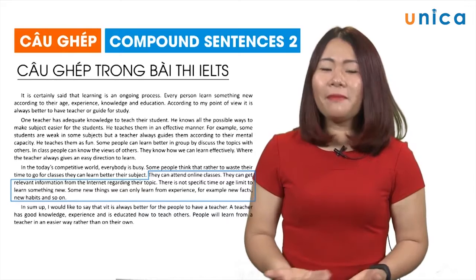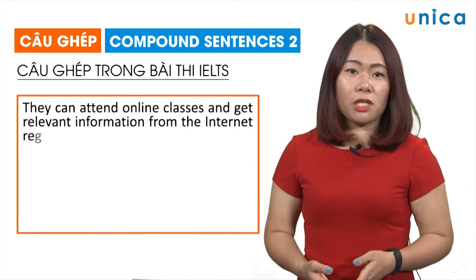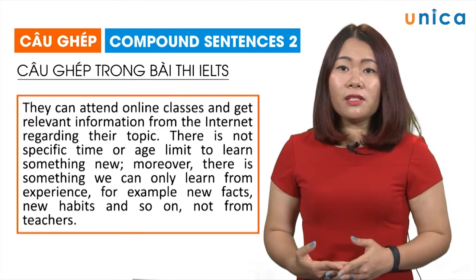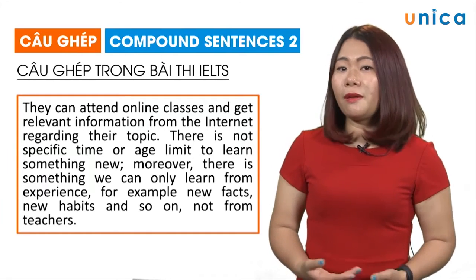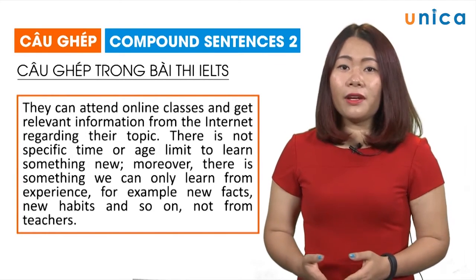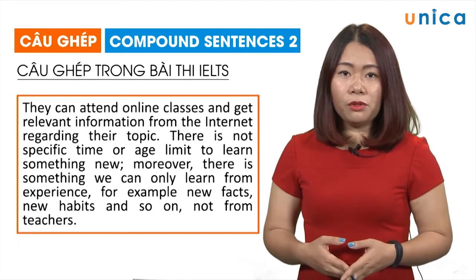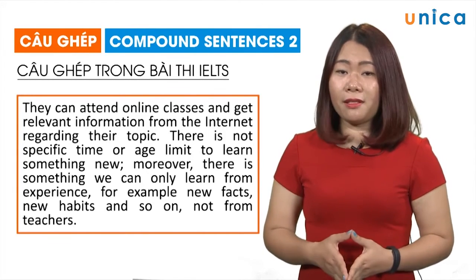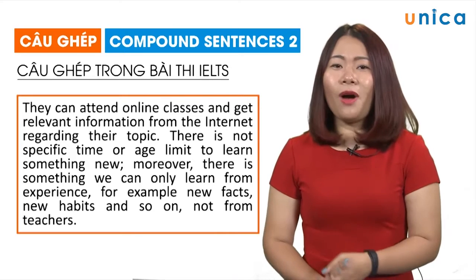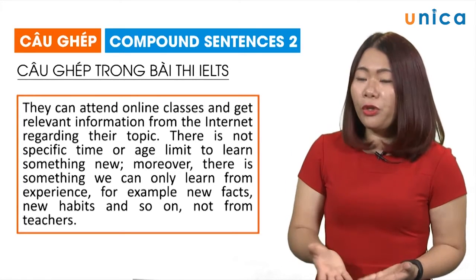Và bây giờ sẽ là gợi ý ghép câu như sau: 'They can attend online classes and get relevant information from the internet regarding their topic. There is not specific time or age limit to learn something new; moreover, there is something we can only learn from experience, for example, new facts, new habits and so on, not from teachers.' Vậy rõ ràng là câu sau hấp dẫn hơn nhiều so với câu trước, các ý gọn hơn và có sự kết nối, liên kết với nhau.